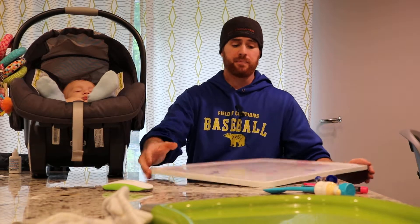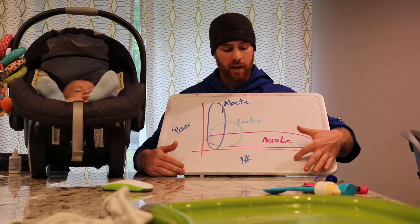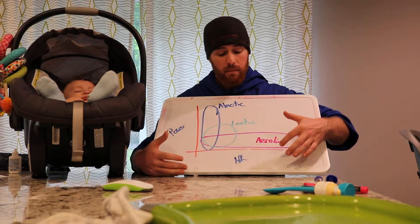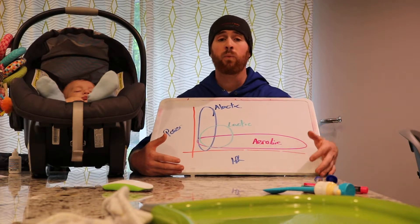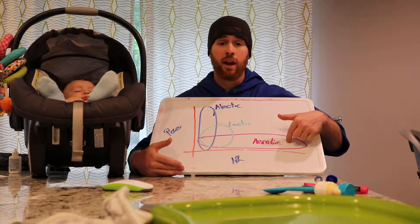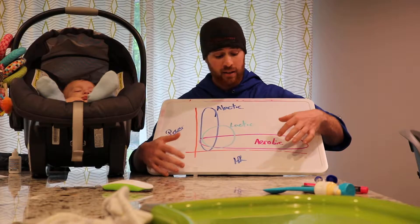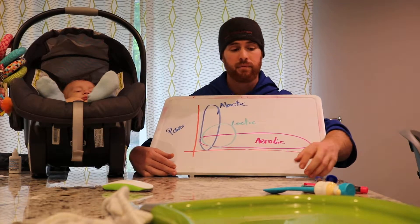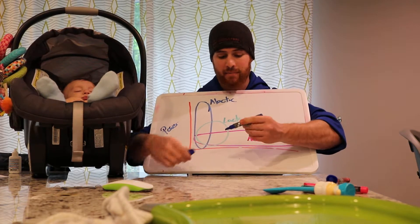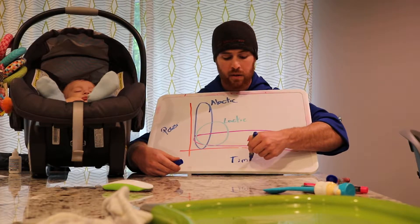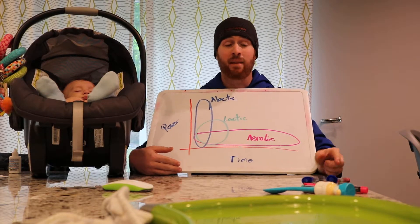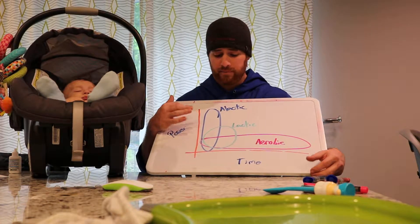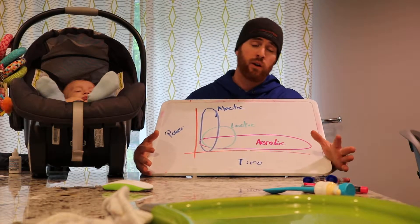This first chart has time at the bottom and power output on the other axis. At a given intensity, you're going to be using a certain way to produce energy. You can produce energy aerobically if the intensity is low and you need a longer duration. If you need to do something for a long time and it's not that intense, you're using your aerobic energy systems. If you need to increase the power and do it for a short period of time, you're using your anaerobic energy systems.